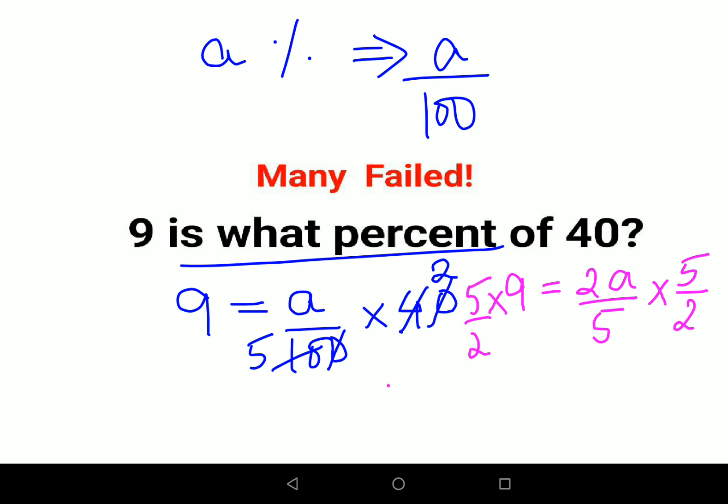So here we can say, therefore value of A comes out to be 45 upon 2, that is nothing but 22.5.